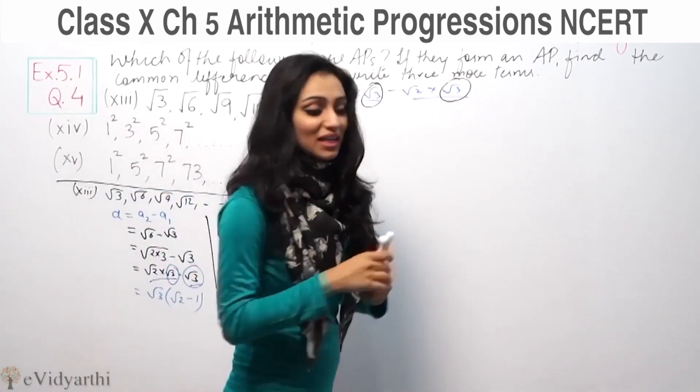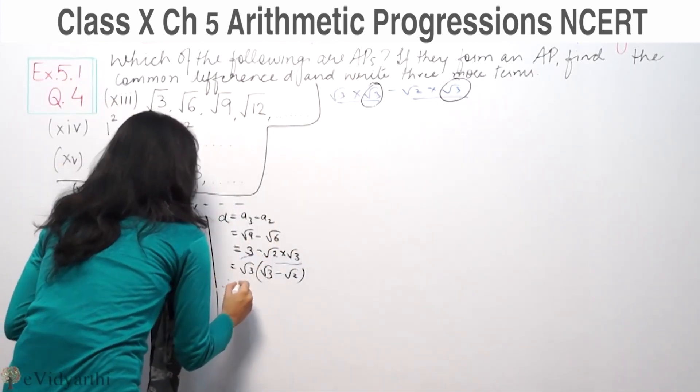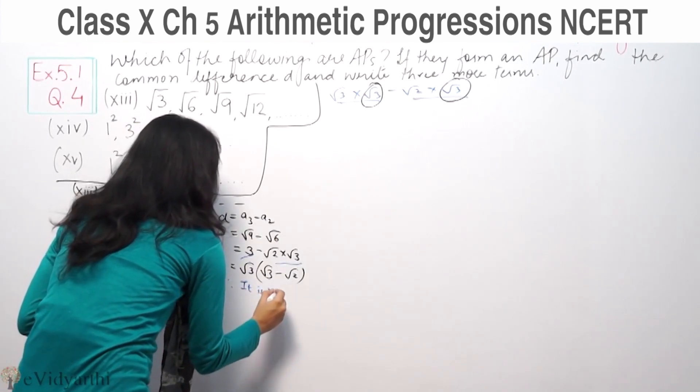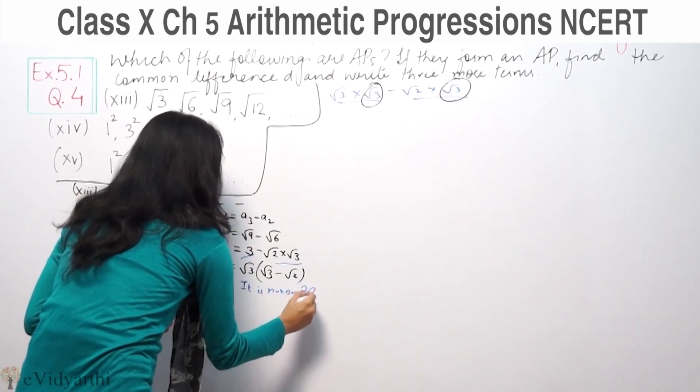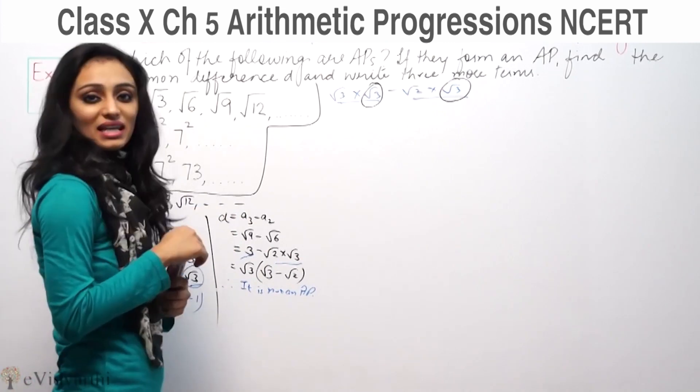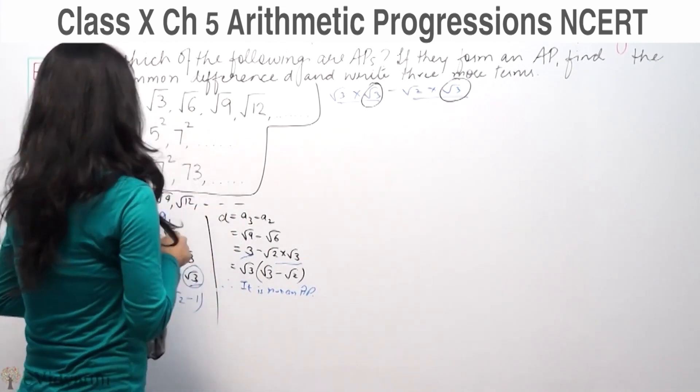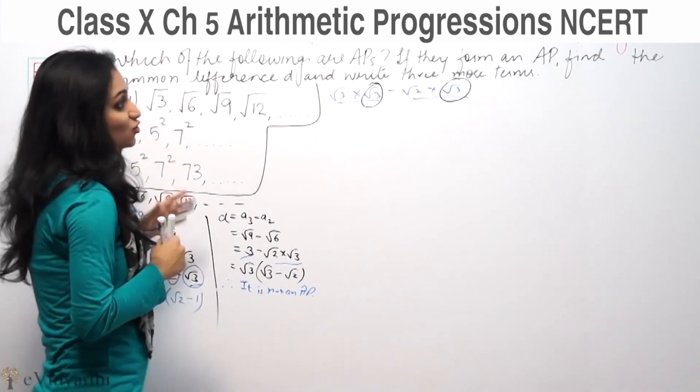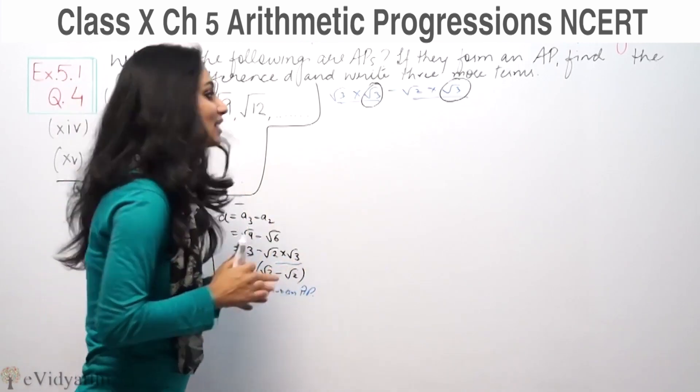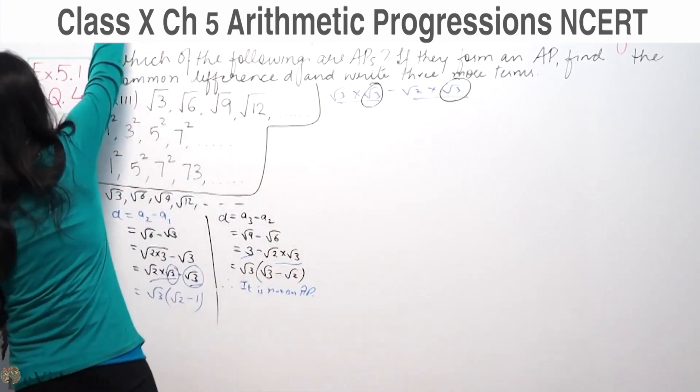Here and here both have root 3, but the brackets are not the same. Therefore this is not an AP. Common difference is not the same, so we don't need to solve further.